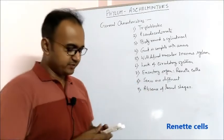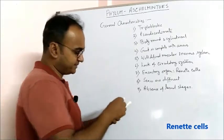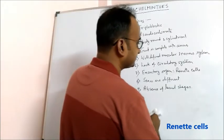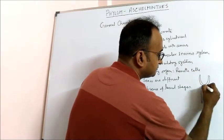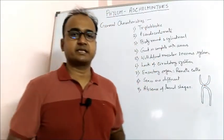Their excretory organ is a special kind of cell called rennet cells, which is an H-shaped cell like this. This is called rennet cells.